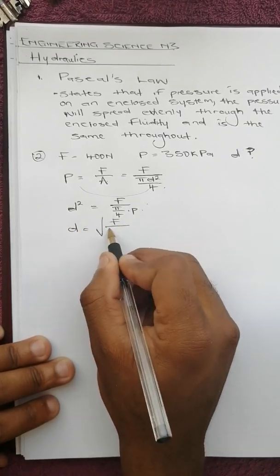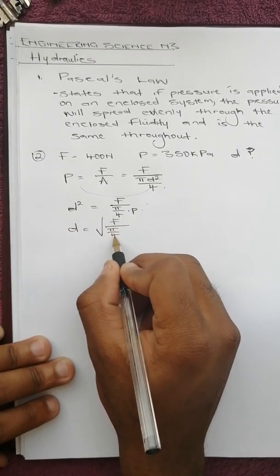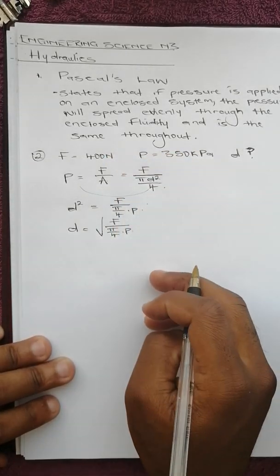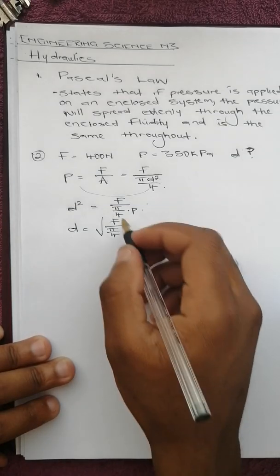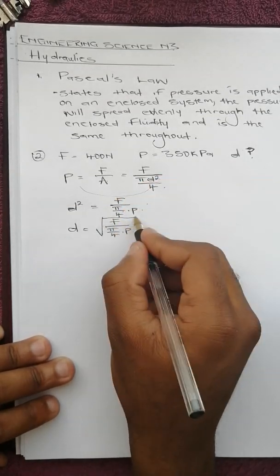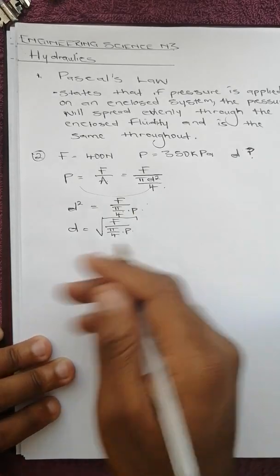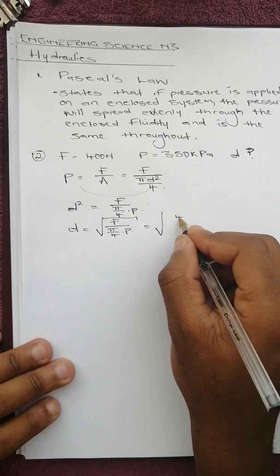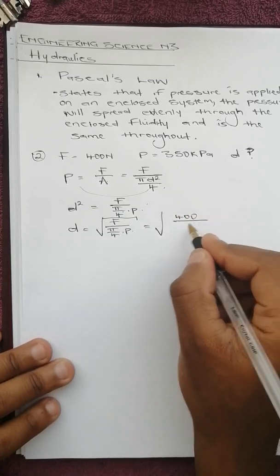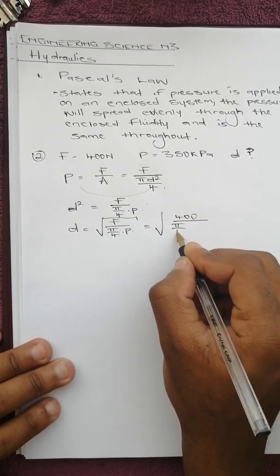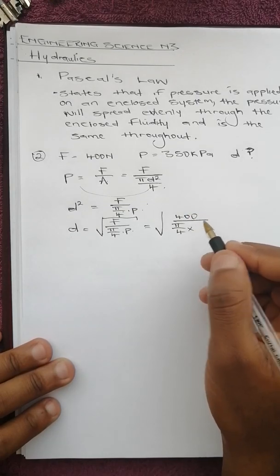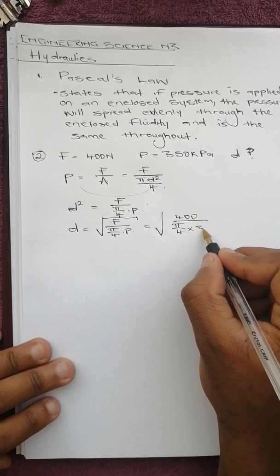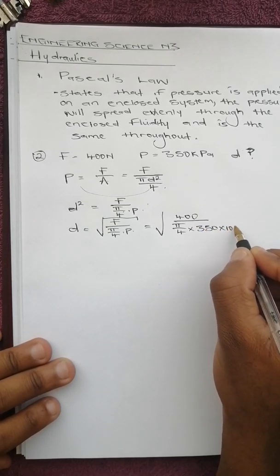We substitute what we have: force is 400, pressure is 350 kilo, so it's 350 times 10 to the power of 3.